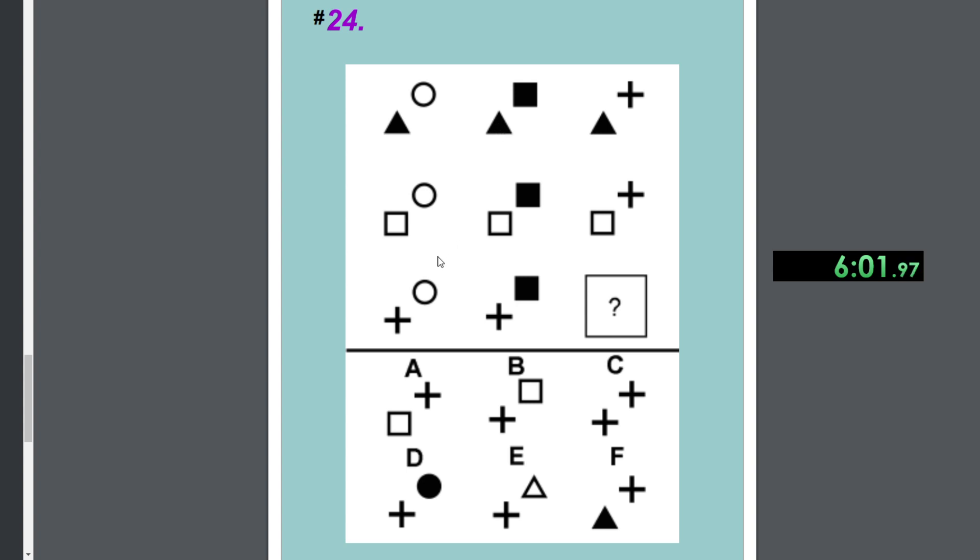The bottom left repeats in the rows. Top right repeats in the columns. C is correct.